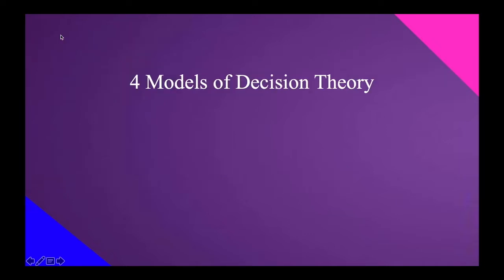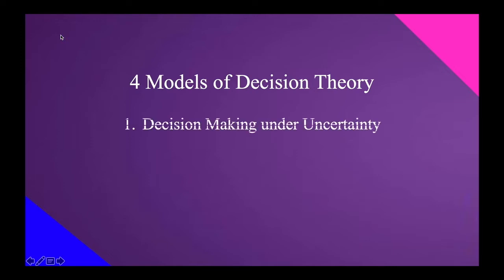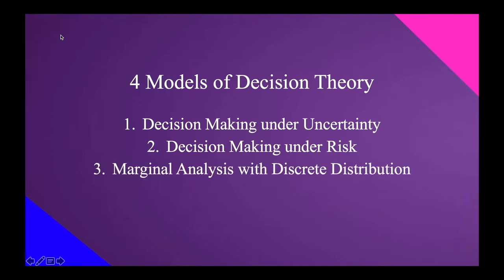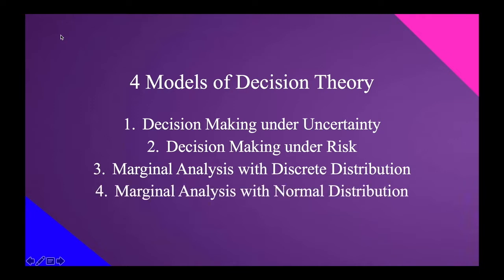We have four different models of decision theory. The first model is decision-making under uncertainty. The second is decision-making under risk. The third is marginal analysis with discrete distribution, and the fourth is marginal analysis with normal distribution. For this presentation, we will focus only on the first model: decision-making under uncertainty.